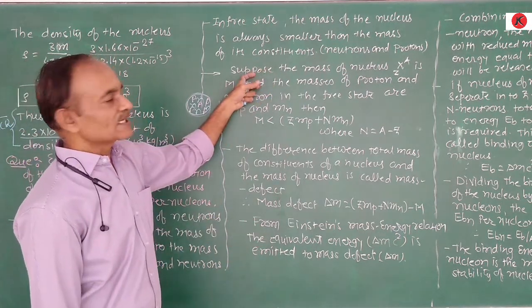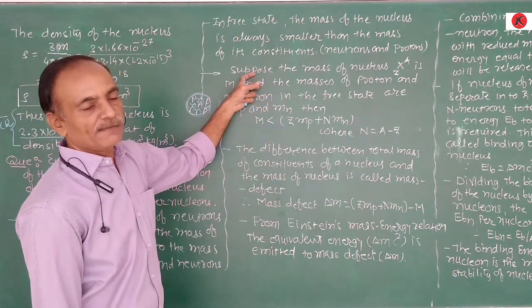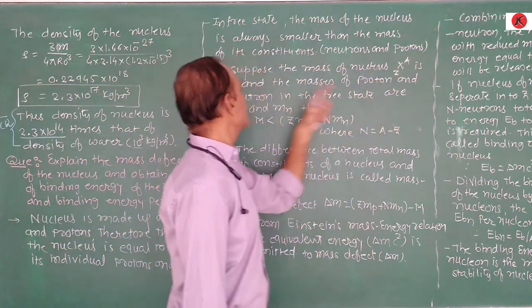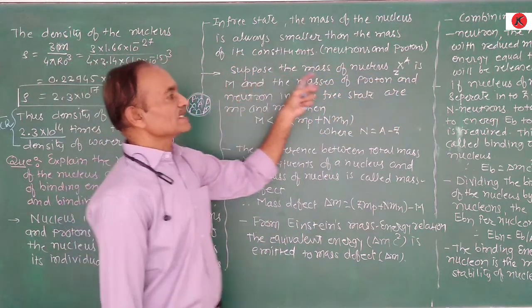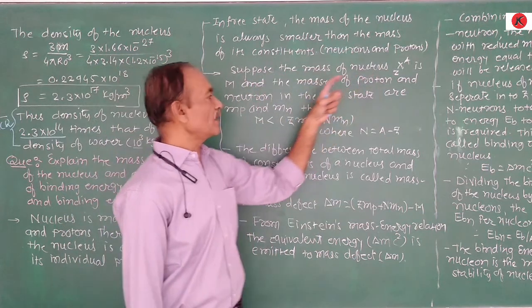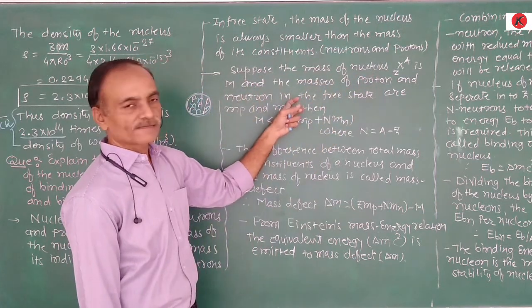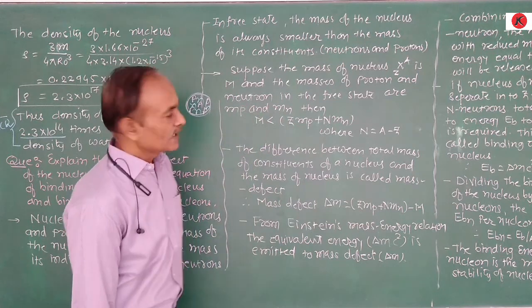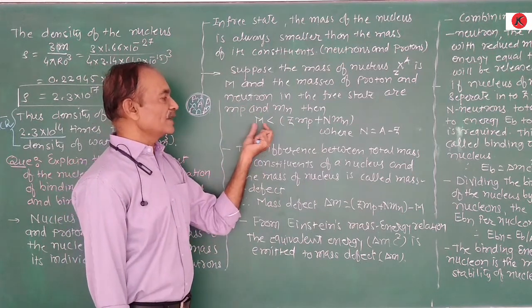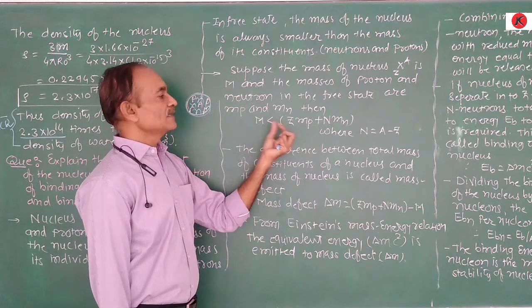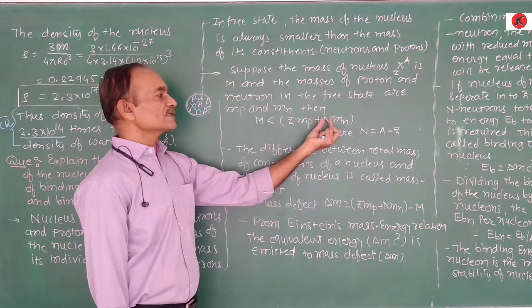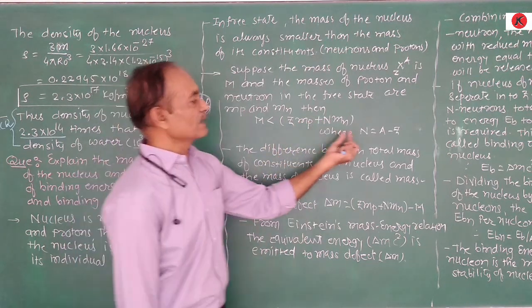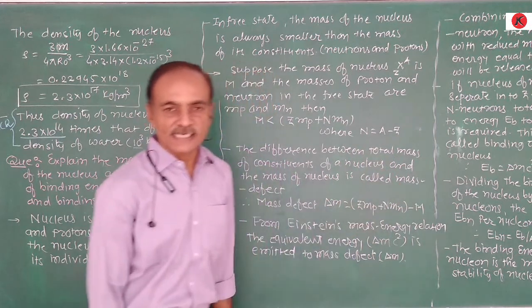For a given element, suppose the mass of the nucleus X with atomic number Z and mass number A is capital M, and the masses of the free proton and neutron are Mₚ and Mₙ respectively. The number of neutrons is N = A − Z. The mass of the nucleus M is less than Z·Mₚ + N·Mₙ.